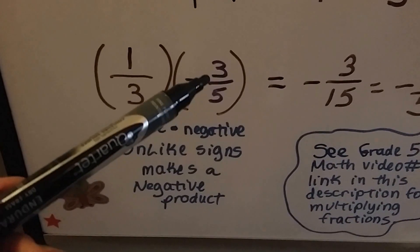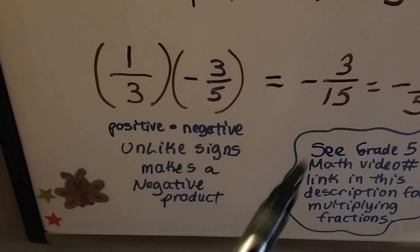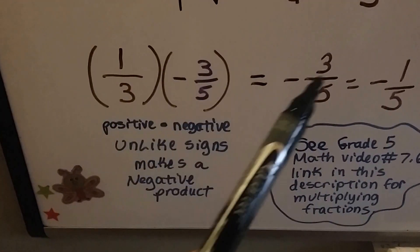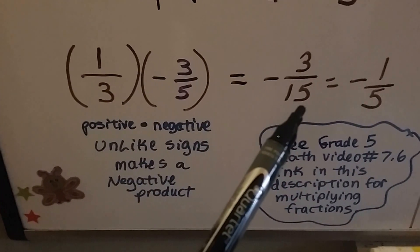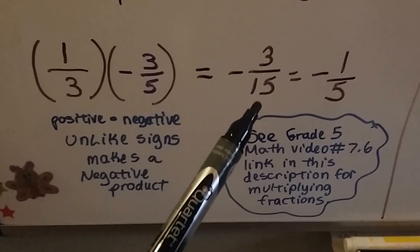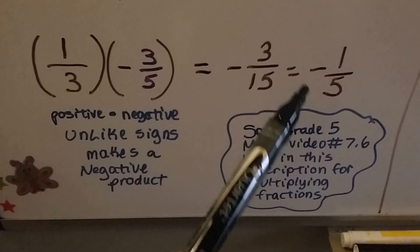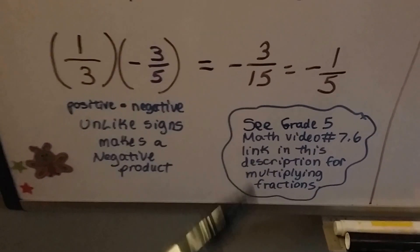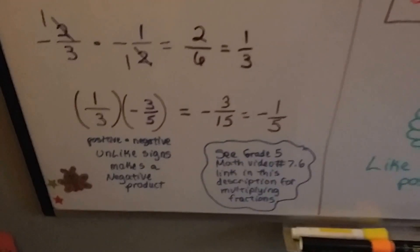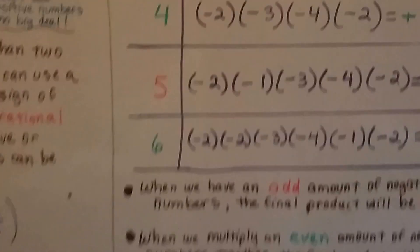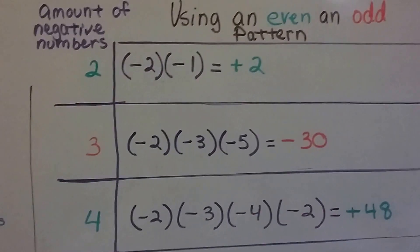Now we have a positive and a negative, so that's going to give us a negative answer. 3 times 1 is 3, and 3 times 5 is 15, so we have negative three-fifteenths, which simplifies to negative one-fifth. Don't forget to check this video's description for a link about multiplying fractions for a quick review.